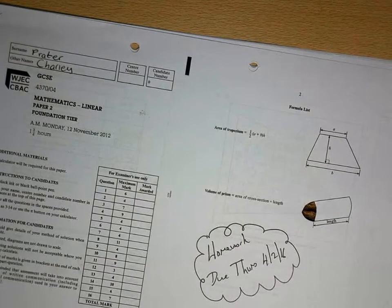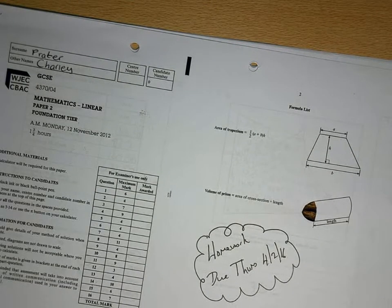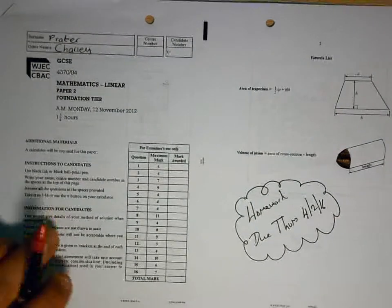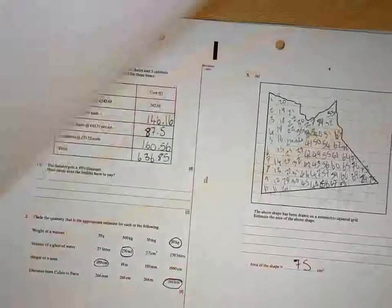Alright Charlie, so last week was a bit of a horror show for you really, only scoring 16. So let's see if we're any better with this paper 2 where we're allowed to use a calculator.